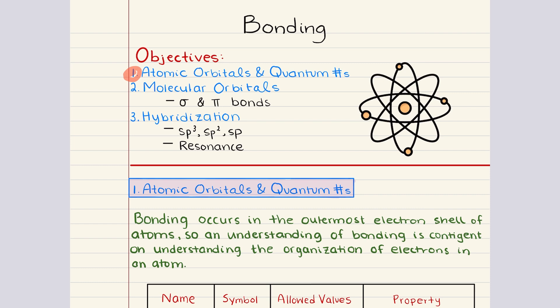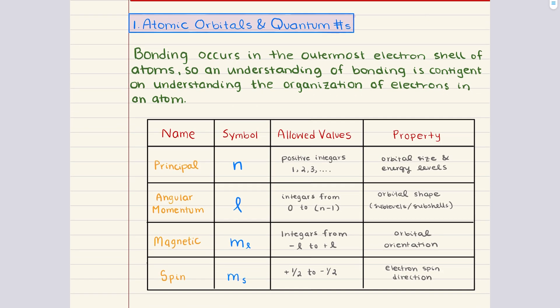Then we're going to move into Objective 2, where we're going to talk about molecular orbitals. We'll go over bonding and antibonding orbitals, and discuss how the overlap of orbitals gives rise to sigma and pi bonds. Finally, we will talk about hybridization and touch on resonance just a little bit. Let's go ahead and get started with quantum numbers.